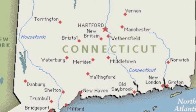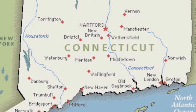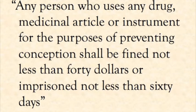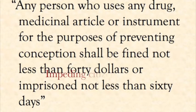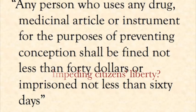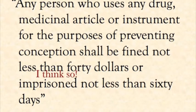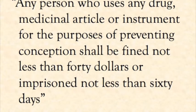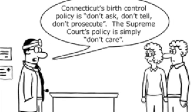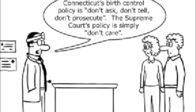The Griswold v. Connecticut case first came about from a law enacted in 1879 by the state of Connecticut. The law stated that any person who uses any drug, medicinal article, or instrument for the purposes of preventing conception shall be fined not less than $40 or imprisoned not less than 60 days. The law was first challenged in 1943 in the Tylson v. Ullman case and then later again in the Poe v. Ullman case in 1961.